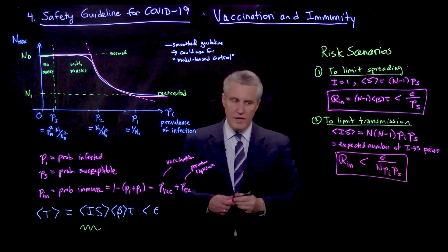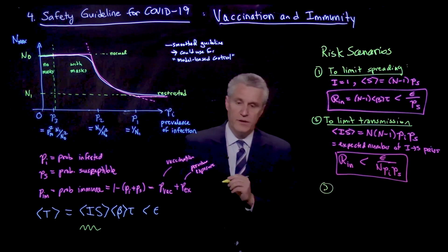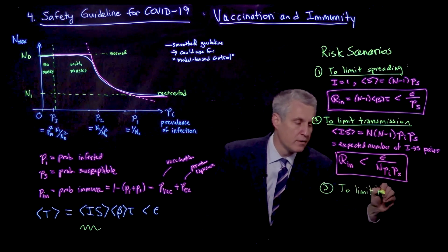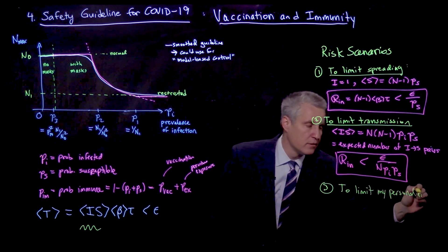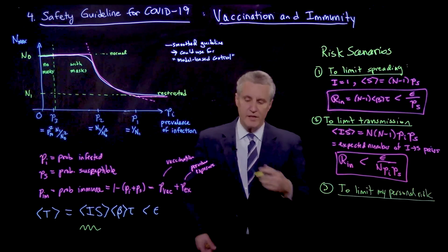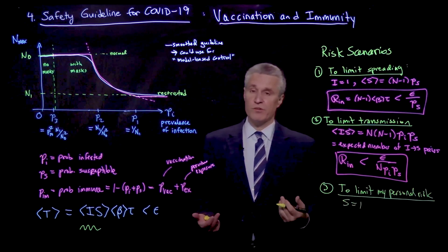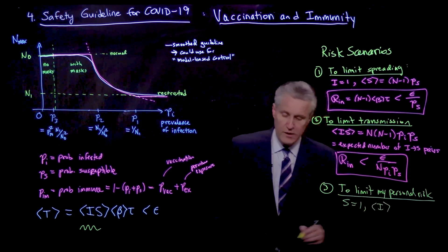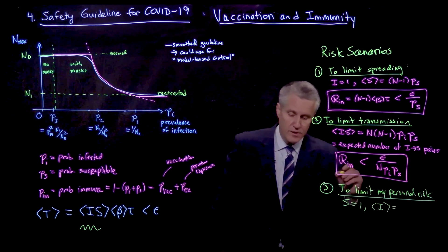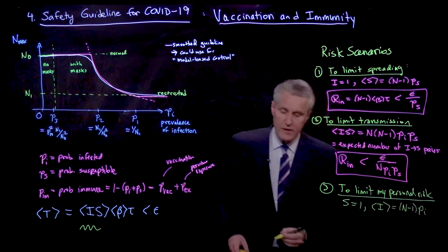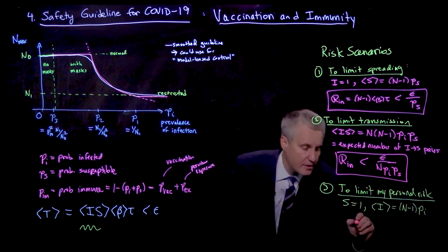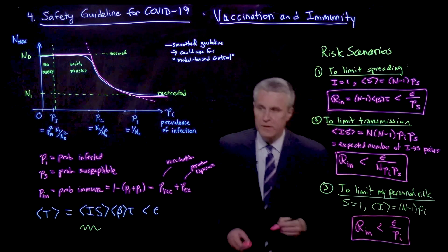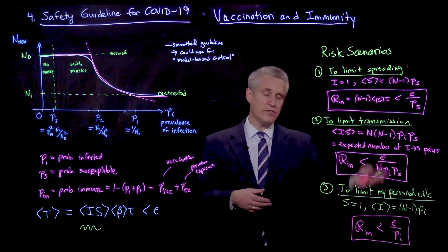The third risk scenario is limiting personal risk. Here s equals 1 — I'm only worried about one susceptible person, myself. Since s is known, we just need the expected value of i, which is (n minus 1) times PI for all the other people in the room. Plugging that into the formula, RN is bounded by epsilon divided by PI.